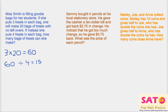So the answer is 15 bags. Moving on to the next problem: Sammy bought four pencils at his local stationery store. He gave the cashier a $10 bill and got $2.75 in change. He noticed he got too much change, so he gave back $0.75. That means he was actually supposed to receive $2.00 in change.